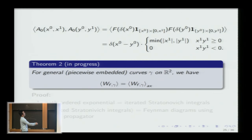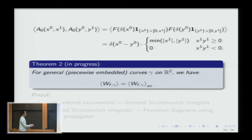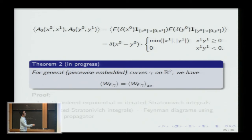The next result — still in progress — is that the exact expectation equals the perturbative axial gauge expectation on R². This answers the fundamental question on R², although in an unsatisfying way: the theory is free in this gauge, so it's not too surprising that exact and perturbative agree.